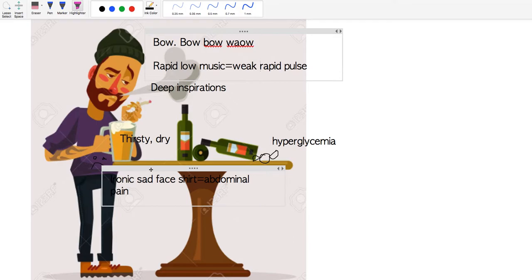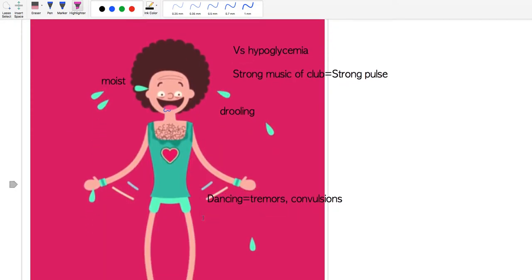Lastly, you have his ironic sad face shirt that's going to represent abdominal pain seen in hyperglycemia. Heading over to hypoglycemia now.